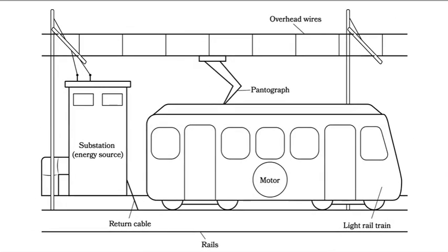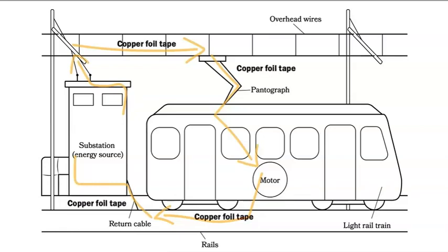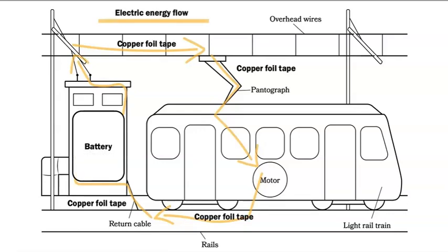We just saw how electricity flows through a light rail system. Use your finger to trace the path on this diagram. The yellow arrows indicate the direction of energy flow. This diagram is starting to look just like my light rail circuit model. I'll add labels to show where the copper foil tape is used and where the battery goes, and add a key for the yellow arrows representing electric energy flow. Energy comes from the substation, represented by the battery, and flows through the overhead wires, down the pantograph, into the train, and through the wheels and rails back to the battery in a closed circuit. Your task after this lesson will be to write a description of how energy transformation causes the train to move.